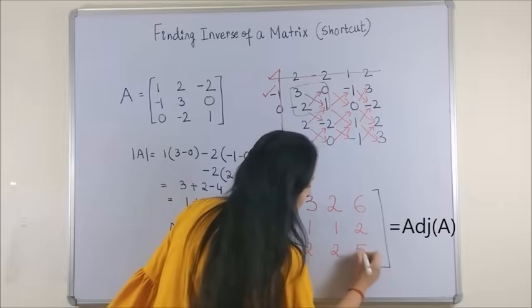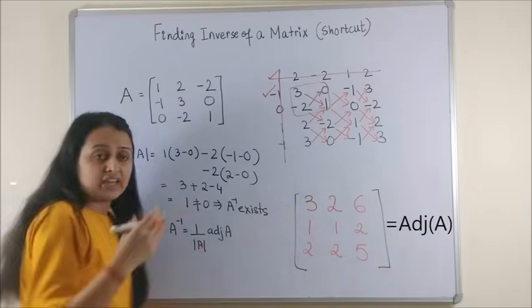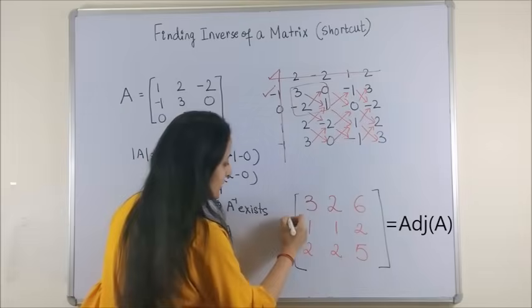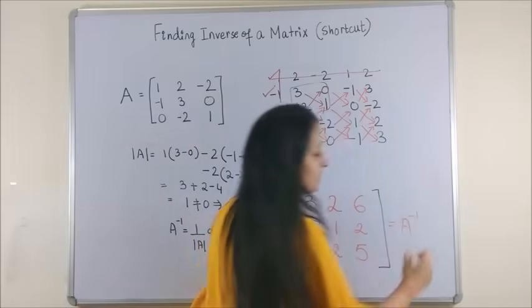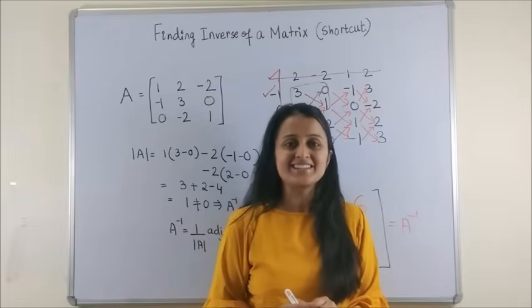And you already know that determinant of A is 1 in this case, so into 1. That's it. This is your A inverse. You can tally it. Trust me, this is the answer.